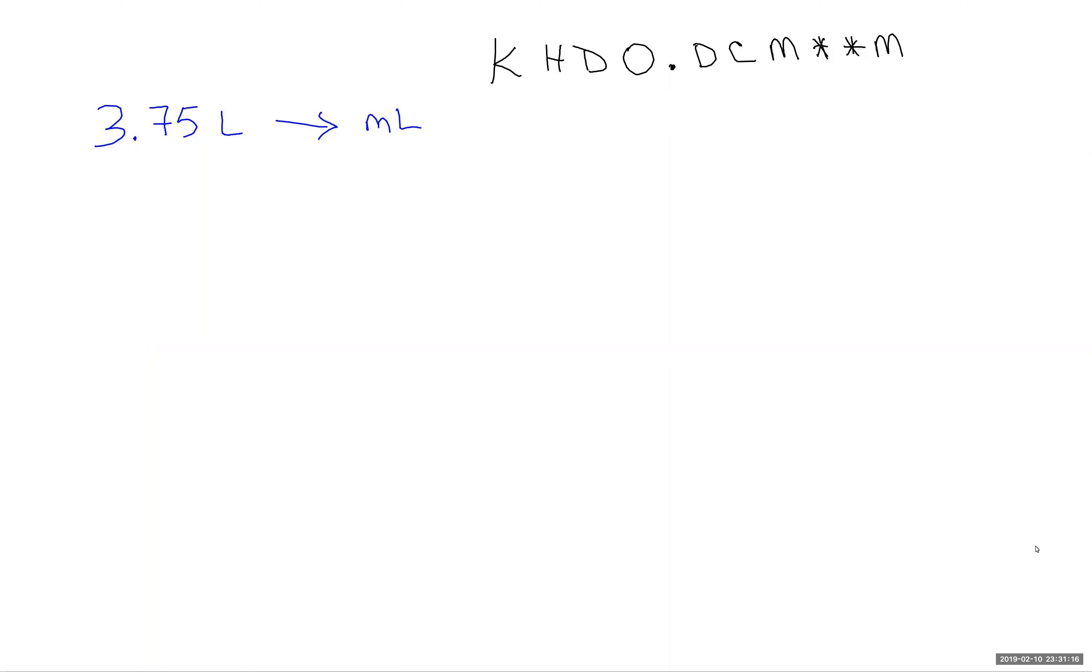We're going to look at how to convert within the metric system. Our question would say something along the lines of: convert the following metric measures to the equivalent units indicated. We have 3.75 liters and we want to convert it to milliliters.